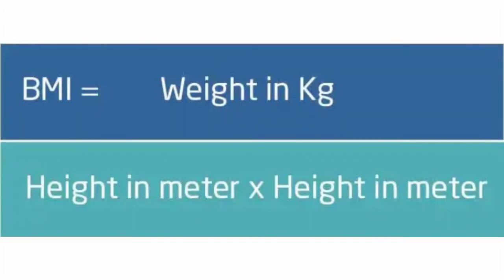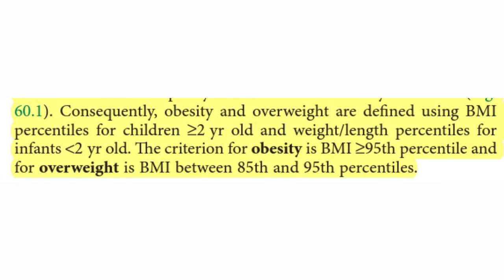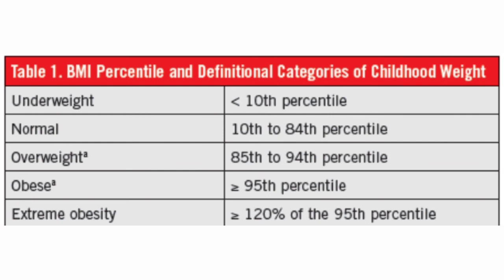The BMI formula is: weight in kg divided by height in meters squared. For obesity assessment, plot on the BMI chart. If age is less than 2 years, use weight-for-length centiles. If age is more than 2 years, use BMI centiles. The criteria: greater than 95th centile is obese; between 85th and 95th centile is overweight.